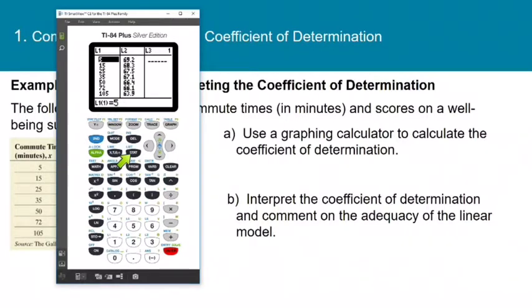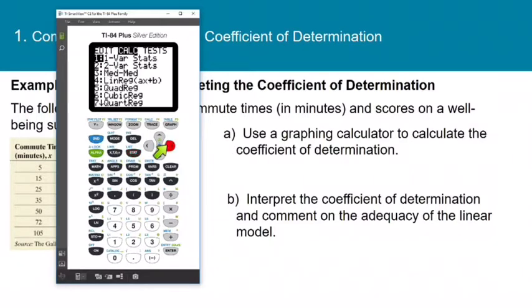Now what I'm going to do is click stat, arrow over to calc, and then option four, linreg. I have the new operating system here, so you just want to make sure that frequency list and store reg eq are blank, because we really don't need to store the regression equation for this data. Otherwise, if you have the old operating system, you can just press enter, assuming your data are in list one and list two. And I will arrow down to calculate and press enter.